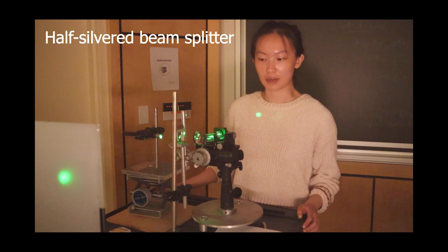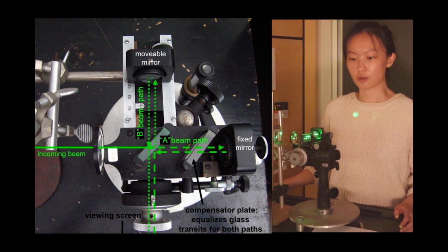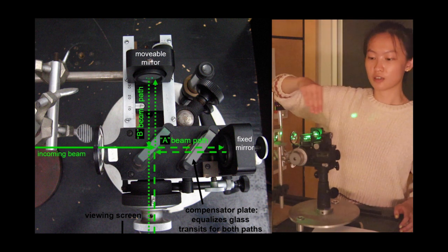After that, we're going to pass it through a half-silvered beam splitter. This beam splitter is going to split the beam into two different paths. We'll call it path A and then path B.